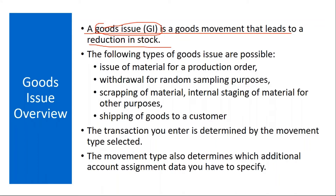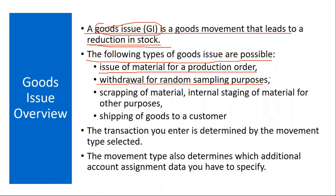Goods issue always results in a reduction of the stock. The following types of goods issue are possible: issue of a material for a production order, and withdrawal for random sampling purposes. In the quality control department, they want to do quality inspection of a material, so they take some samples — that is called withdrawal for sampling.